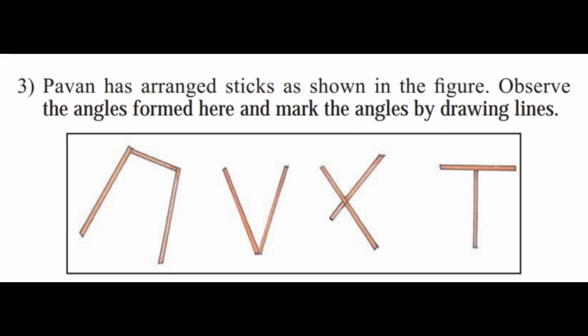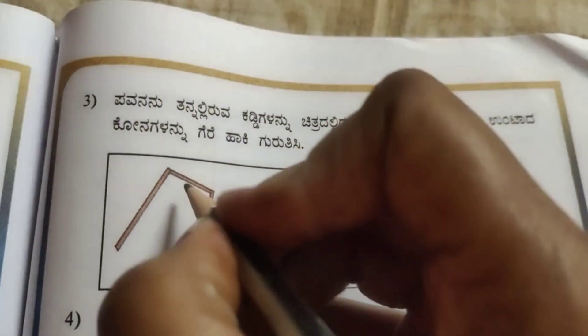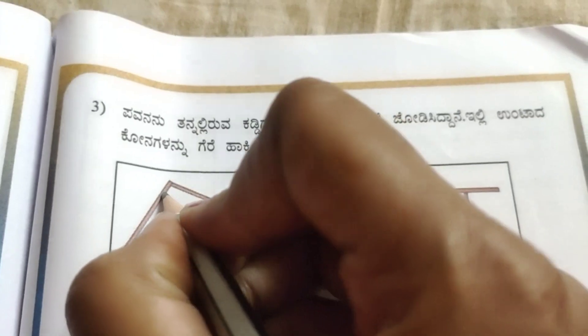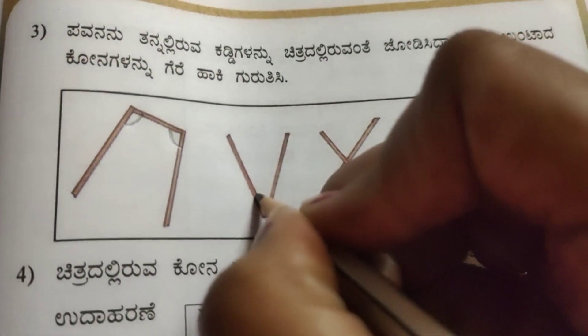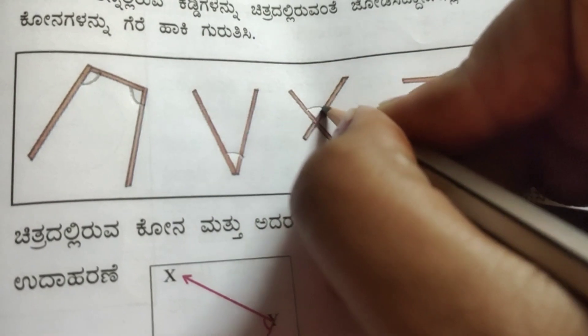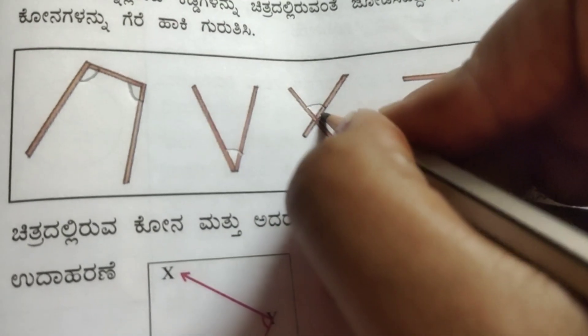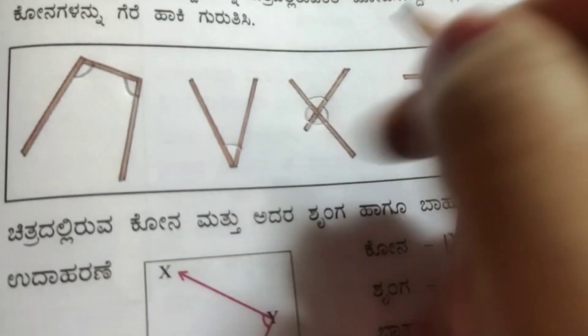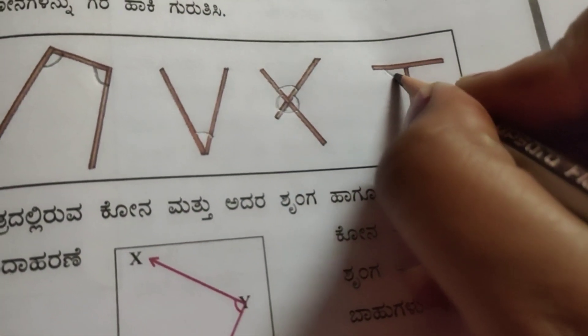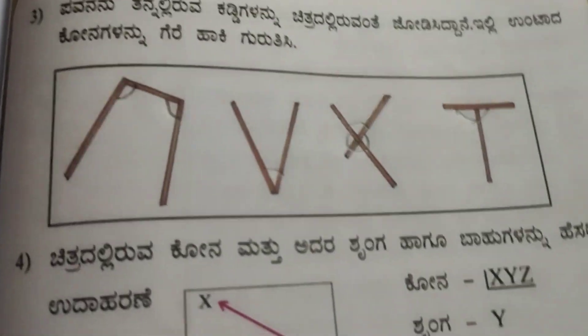Third question. Pavan has arranged sticks as shown in the figure. Observe the angles formed here and mark the angles by drawing lines. See the figures. There is one angle marked with pencil. See this side also, there is one angle. It is in the V shape, so in the center there is one angle. This is in the X shape, so here is one angle and this side has four angles. Next, it is in the T shape, so it has two angles.